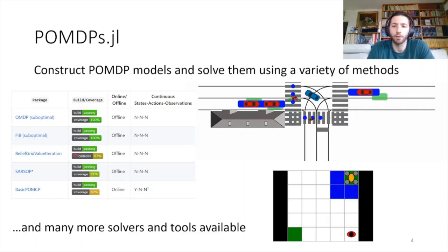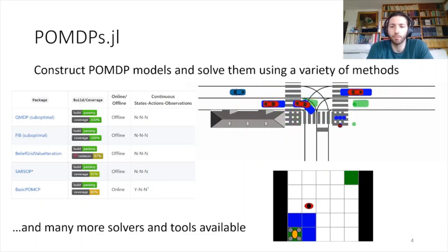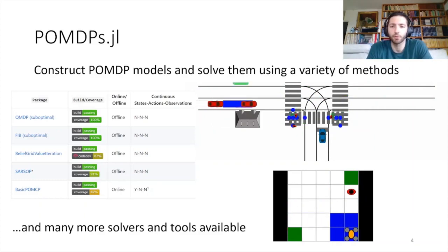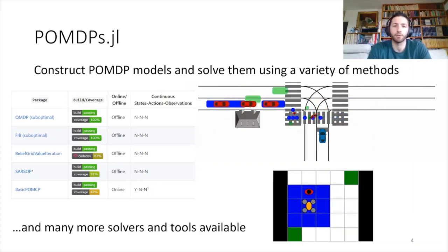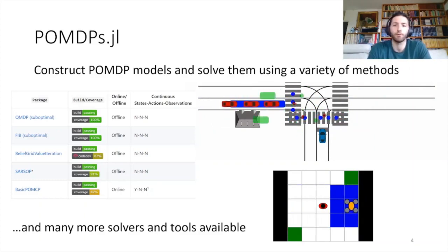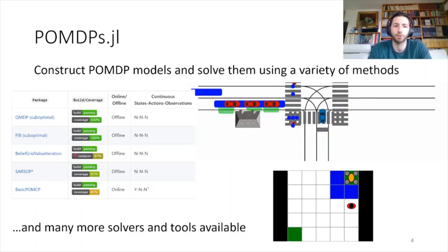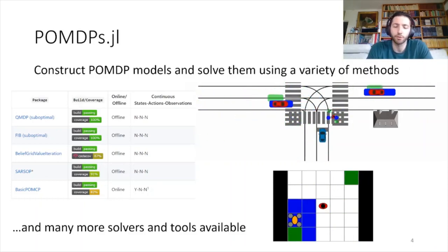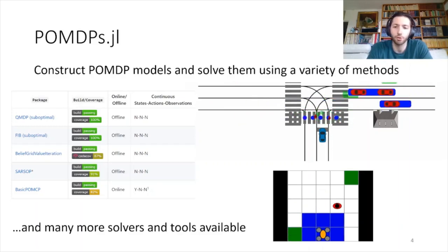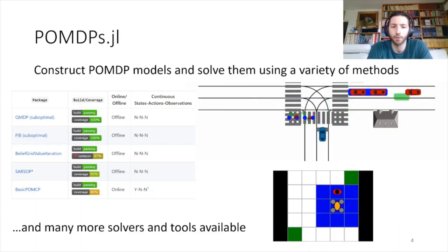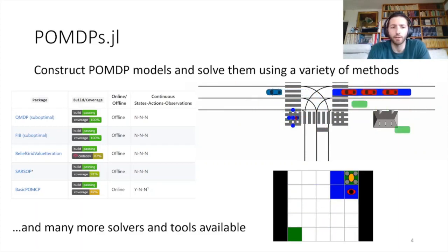For example, in this autonomous driving scenario, the blue car is able to perform left turns in an environment with occlusions. This behavior was computed automatically by formulating the problem using POMDPs.jl and using one of the multiple available solvers. We also have toy problems from the literature like the drone surveillance problem. Using state-of-the-art solvers and a reward function, we can automatically compute behaviors for an agent.